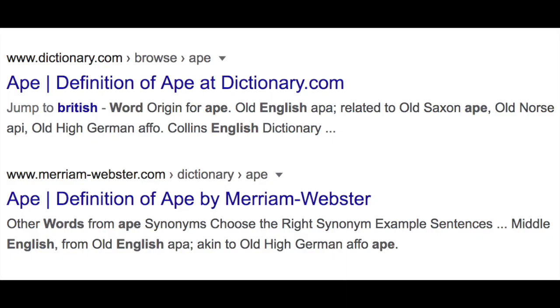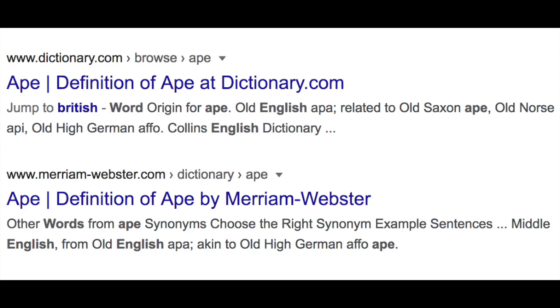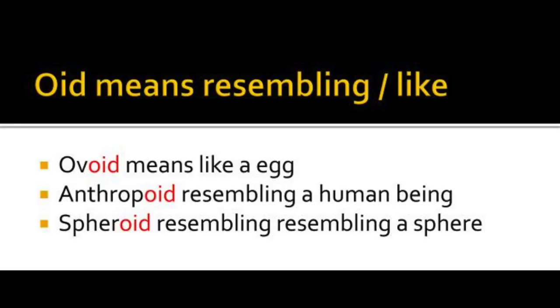First of all, apes are not a clade. Ape is an English word. It is not a taxonomic term. English words do not need to be monophyletic. French, German, Russian, and other languages do not have to accord with English in the ways of splitting up animals. Taxonomy is international. Everywhere, worldwide, we recognize human beings as part of mankind, not apes.